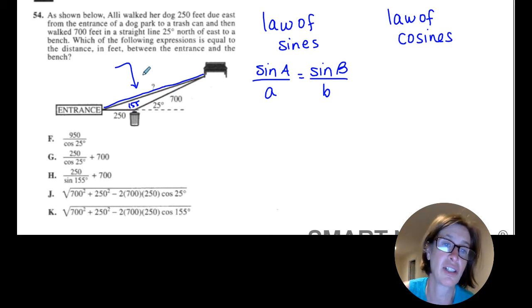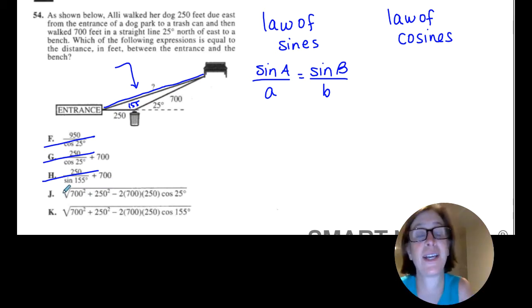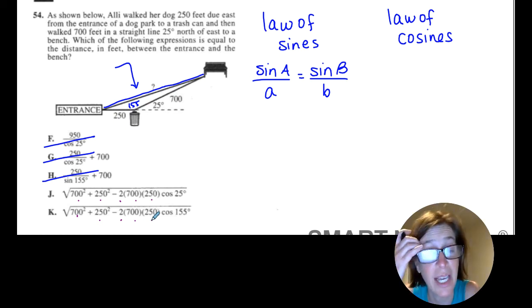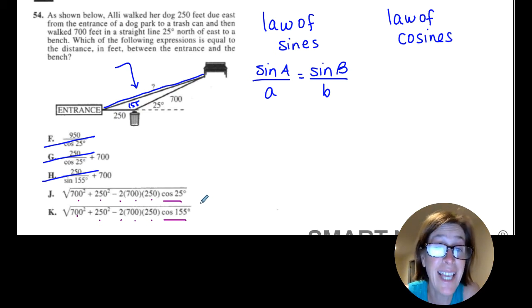So I looked at the answers and I actually quickly got rid of F and G because that's not the law of sines, and the law of cosines doesn't look like that. There wasn't enough information, so I was left with J and K. Now you might be saying, Coach Brett, I don't remember the law of cosines. You actually don't need to remember the law of cosines for this one. Vertically scan these answers: 700, 700, 250, 250, 2, 2, 700, 700, 250, 250. The only difference is in the angle, and I hope you'd recognize the fact that you need the angle that's inside the triangle, not outside the triangle. The angle that is outside the triangle is 25. The angle that's inside the triangle is 155, giving me K as an answer.